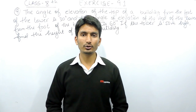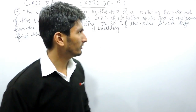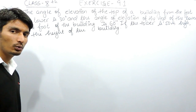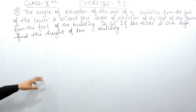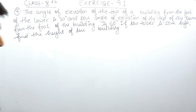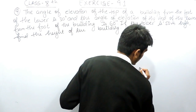Hello everyone, we are from True Math and in this video we are going to solve question number 9 of exercise 9.1. The question says: the angle of elevation of the top of a building from the foot of the tower is 30 degrees, and the angle of elevation of the top of the tower from the foot of the building is 60 degrees. If the tower is 50 meters high, find the height of the building.